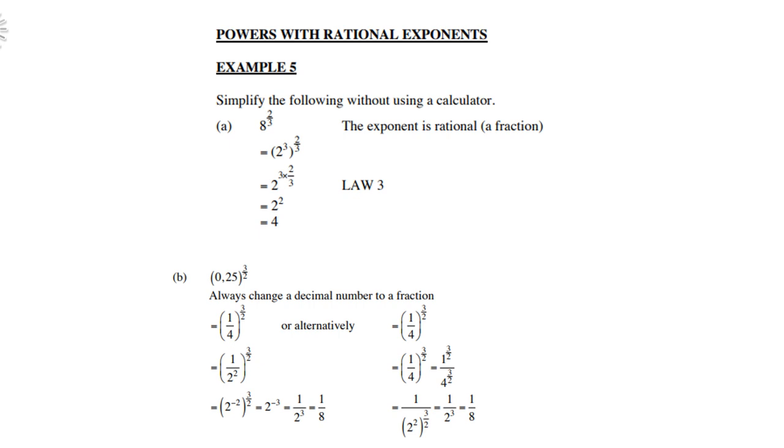Then a quarter, of course, is 1 over 2 squared. Take the 2 squared up, it becomes 2 to the power negative 2. Then negative 2 times 3 over 2 gives you 2 to the power negative 3, which of course you can write as 1 over 2 to the power 3, which is 1/8.